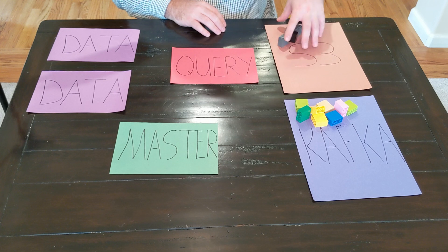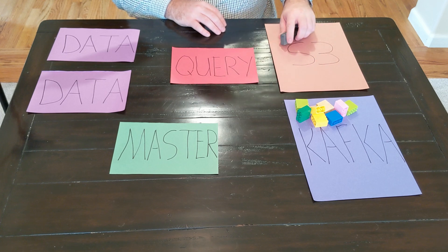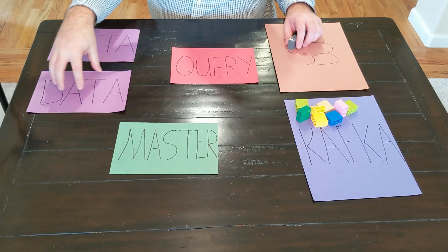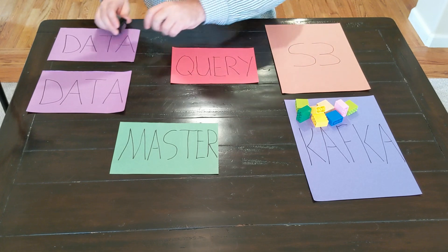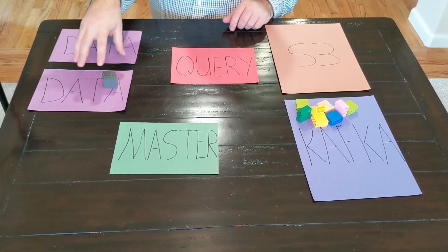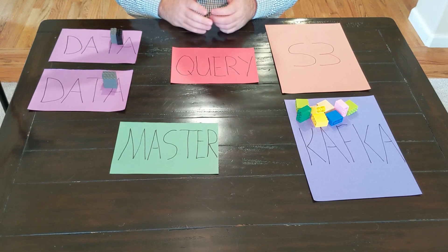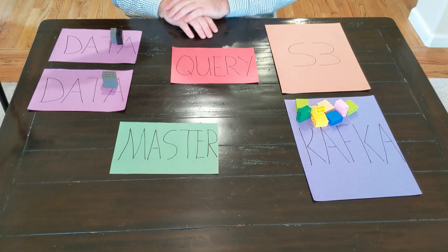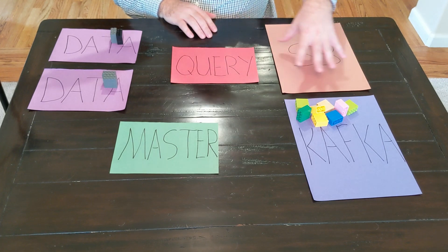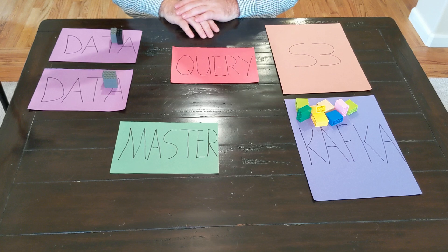The data in Druid is not single files — it's broken up into segments, and those segments are distributed out. As we do this processing on the data node, that's copied into S3, and from there those segments get distributed back out into the cluster. In a bigger Druid cluster we'd have many more data nodes. That's what happens with batch ingestion — it starts from data stored in deep storage, gets processed by the data node, and is then distributed out as segments.